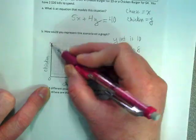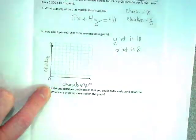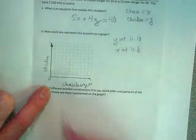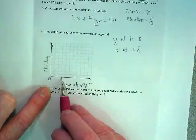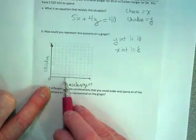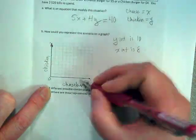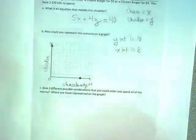It's right up here. Where am I going to put my x intercept? 1, 2, 3, 4, 5, 6, 7, 8. Okay, and then I can draw my line.